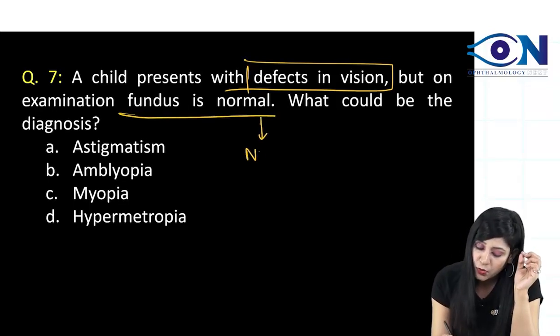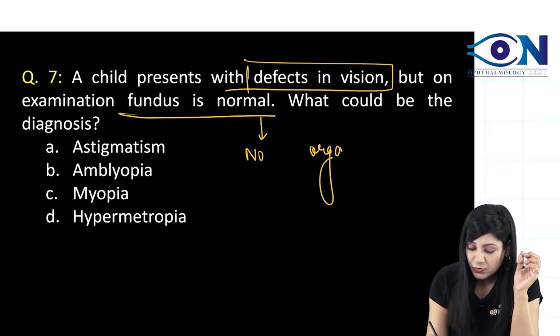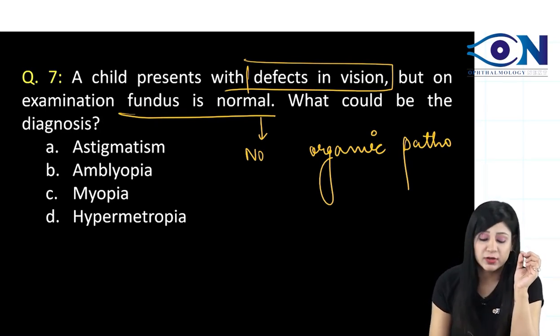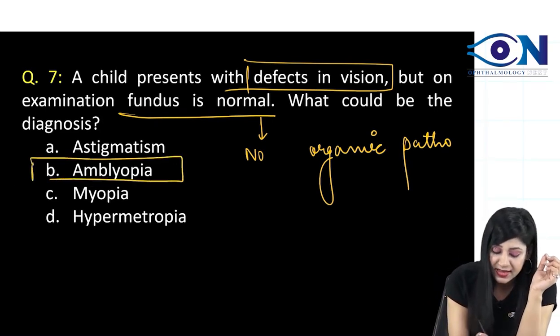Fundus is normal means no organic lesion. No organic lesion or no organic pathology is there. And when we do not have any organic pathology, that is called as amblyopia.